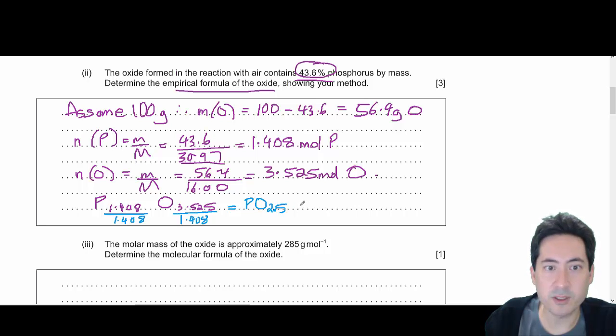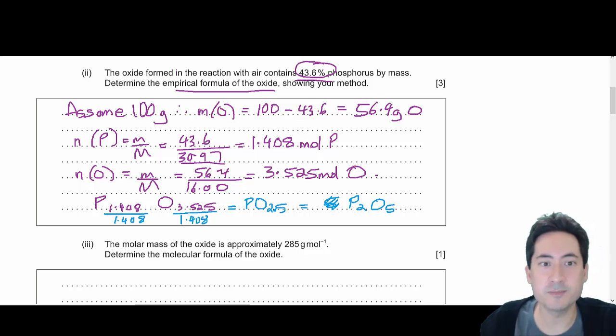You can't have fractions. So your final answer is times both sides by 2, so it's P2O5 is the empirical formula.